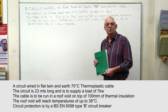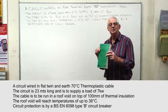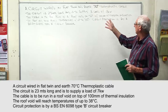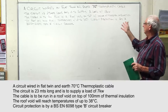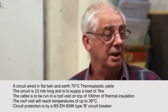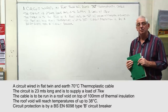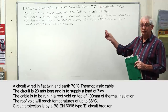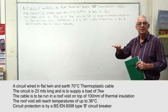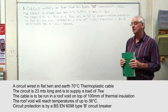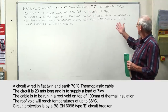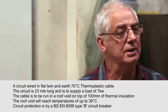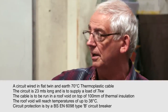I'm going to demonstrate how to carry out a simple cable calculation using the tables from BS 7671. The question on the board says: a circuit is wired in flat twin and earth 70 degree thermoplastic cable, 23 meters long, to supply a load of seven kilowatts. The cable is to be run in a roof void laid on top of 100 millimeters of thermal insulation, and the circuit protection is a BS EN 60898 Type B protective device.